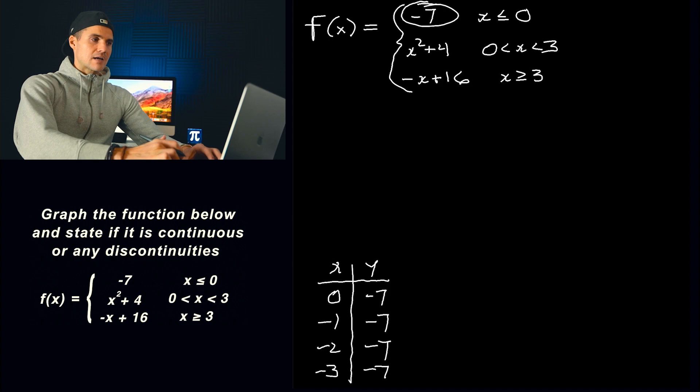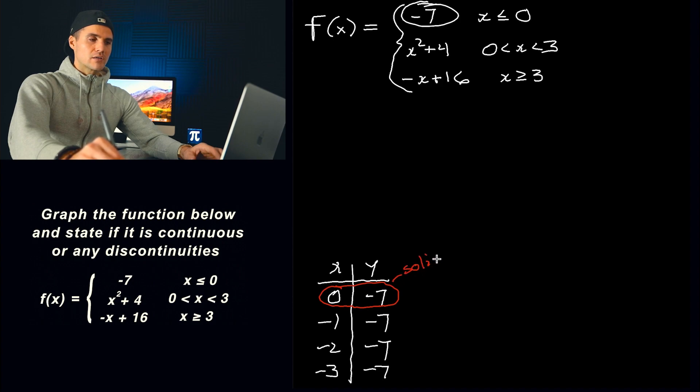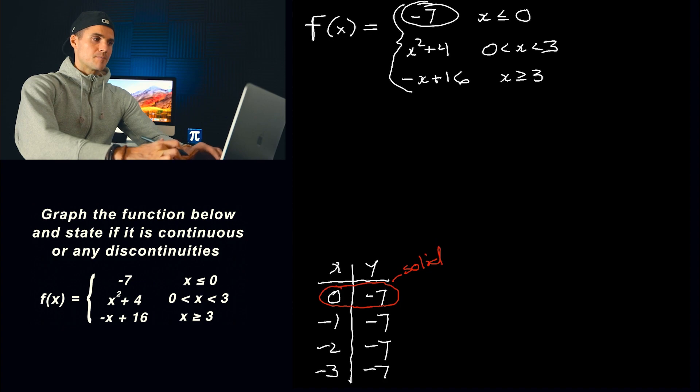Another thing that's important to note is that here notice that we have x is less than or equal to zero. So at an x value of zero, at that specific x value at that meeting point, the y value is going to be defined by negative seven. So this point right here, when we graph it, that's going to be a solid point. If the equal sign was here instead, and this was just x is less than zero, then this point here, zero, negative seven would be a hole. But because it was equaling that x value of zero and negative seven, we've got to make sure we put a solid point there.